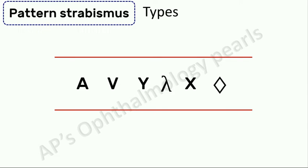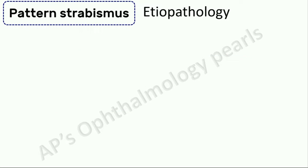These are also referred to as alphabet patterns, as many of the deviation variations look like alphabets. Why do these patterns occur? The origin of pattern strabismus is probably multifactorial.